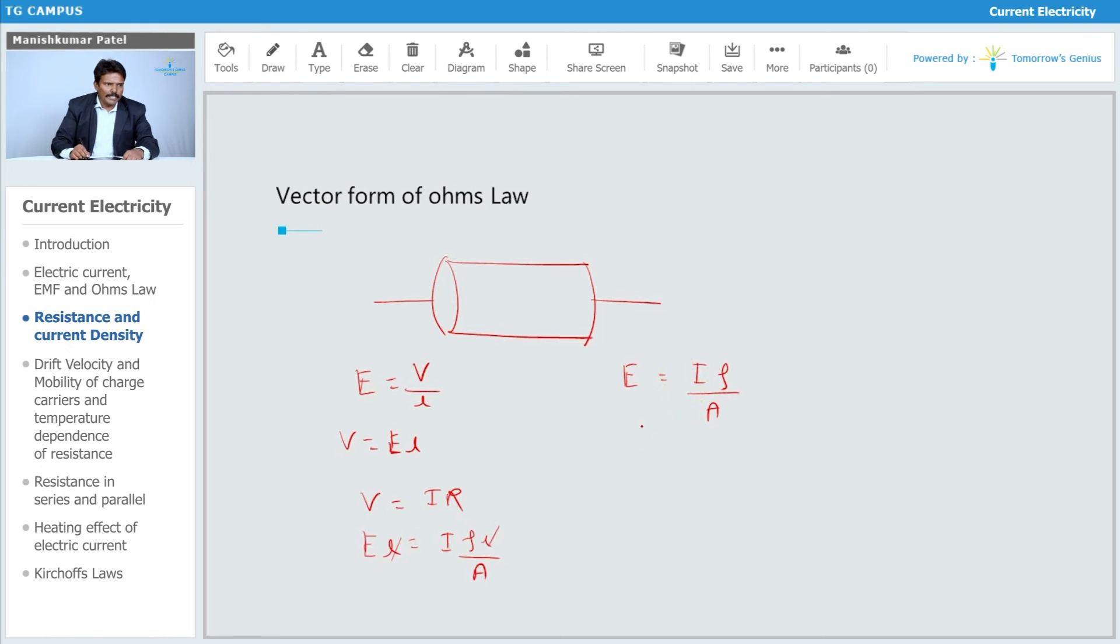Further, I can write down J, that current density I had defined, which is I upon A. Just put the value over here: J into rho.